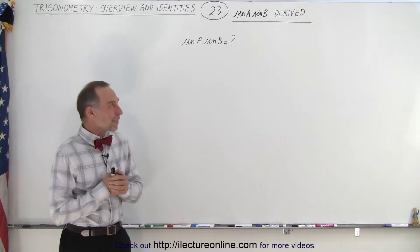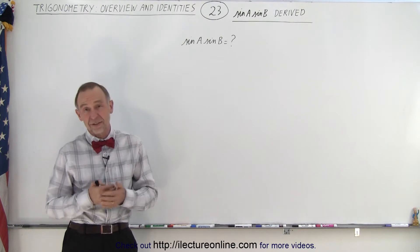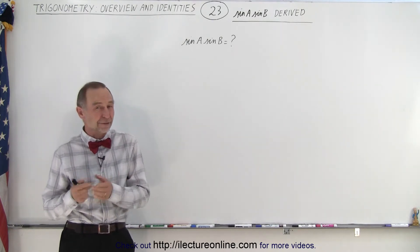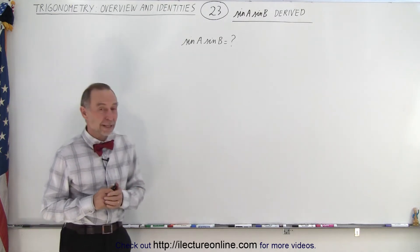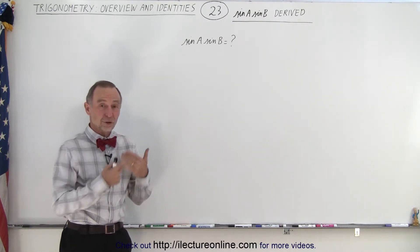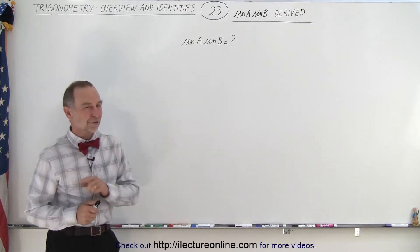Welcome to iLectureOnline. Here we have the product of two trigonometric functions. In this case, it's sine of an angle times sine of a different angle. That's what makes it a little bit more tricky. It actually isn't that difficult to solve except you have to know the trick.